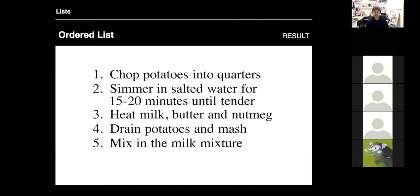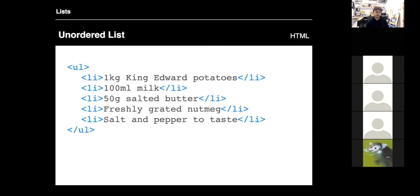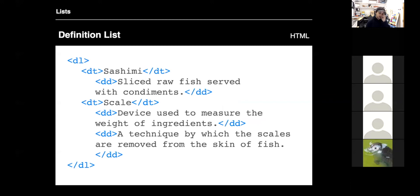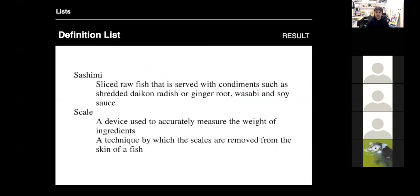Unordered lists are just bullet points. The tag is UL for unordered lists. Again, you just have the LI list points in between the UL open and close tags, and when you load it in the browser it will show bullet points. For definitions, it's DL for definition lists. Inside that, instead of list points, we have DT which stands for definition title, and DD which stands for definition description. So the title is 'sashimi' and the definition is 'sliced raw fish served with condiments.' This is the HTML code and this is what it looks like in the browser.